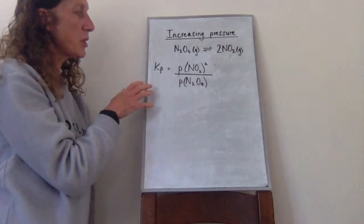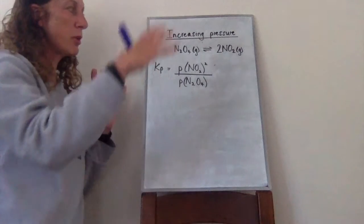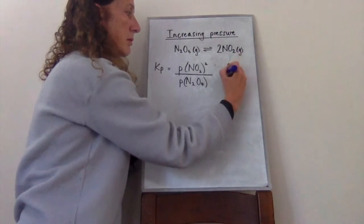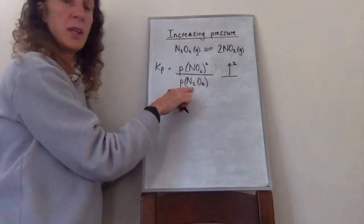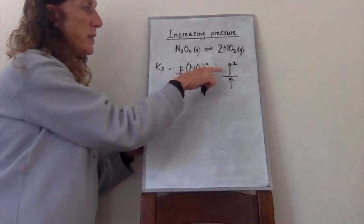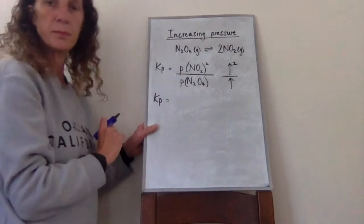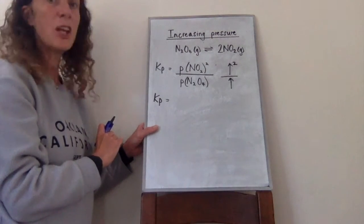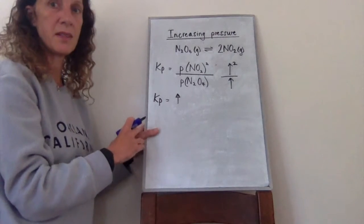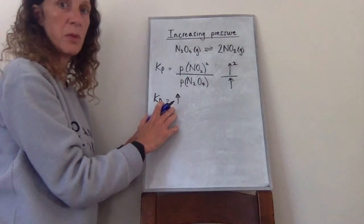To do that we need to think about what actually happens when you increase the pressure on this system. If we apply more pressure, the partial pressure of NO2 is going to go up — squared in the expression — and the partial pressure of N2O4 is also going to go up. Since the numerator increases by more than the denominator, the overall value of Kp is going to increase. But Kp can't go up — Kp has to stay at the same value.